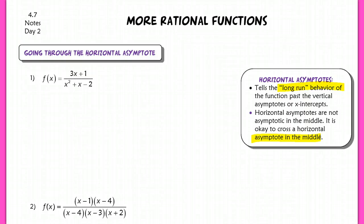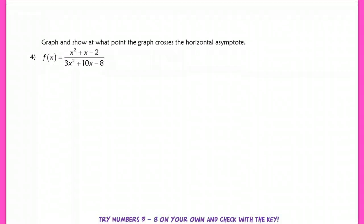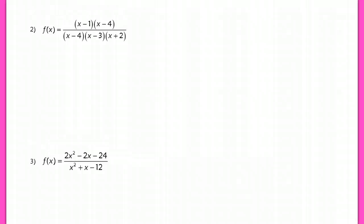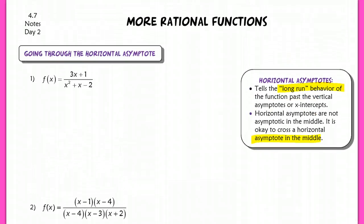For the first three problems, it's obvious that the horizontal asymptote is going through the graph because of the plotted points you can see. For problem 4, it's not as obvious that it crosses, so the directions will explicitly say to graph and show at which point the graph crosses the horizontal asymptote. On a homework, test, or quiz, you should be able to tell by the points you get. I'm going to find the vertical asymptotes, horizontal asymptotes, x- and y-intercepts, and then graph.